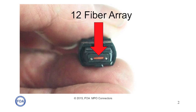As you probably know, the MPO connector is designed as an array connector with 12 fibers in a row, as shown here, or multiple rows of 12 fibers. Although the standard allows for up to six rows or 72 fibers, it's very unusual to see anything other than one or two rows — 12 or 24 fibers — in one of these connectors.